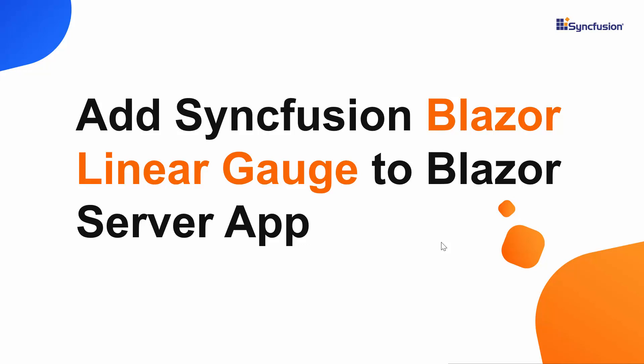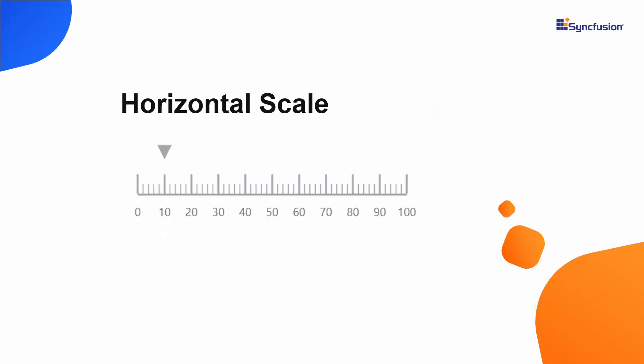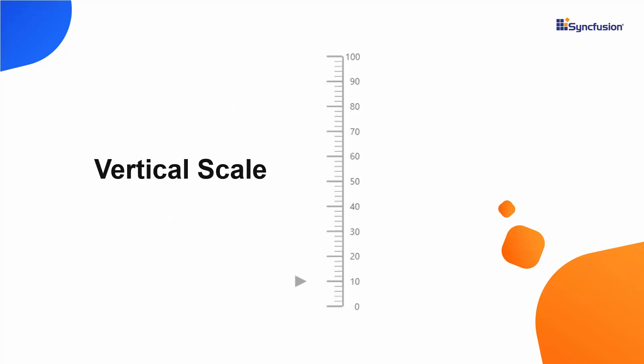Hi everyone. Welcome to this video on how to get started with the Blazor Linear Gauge of Syncfusion. In general, linear gauges are used for visualizing numeric measurements in a horizontal or vertical scale. They usually have one or more pointers to indicate a specific value on the scale.